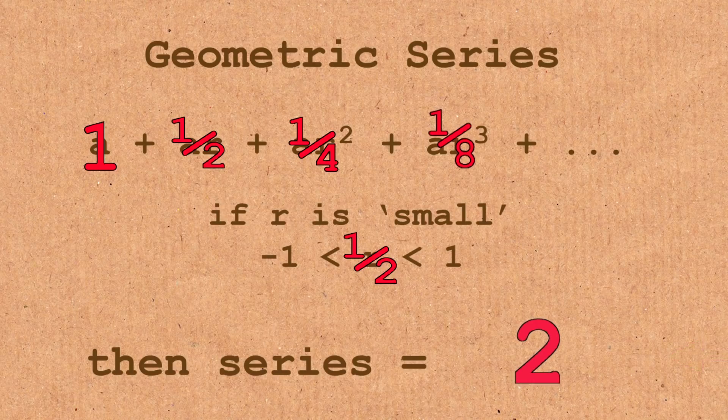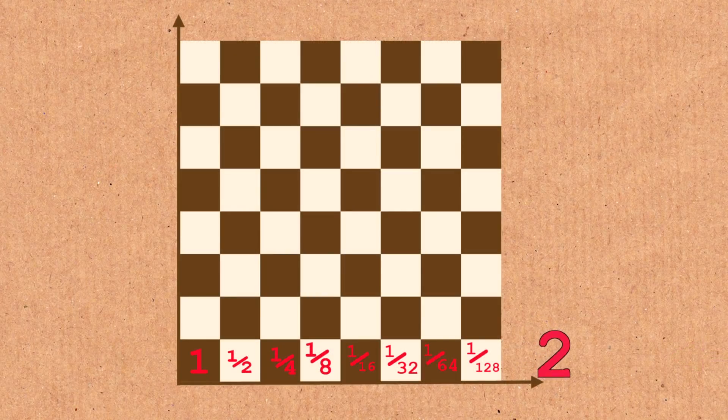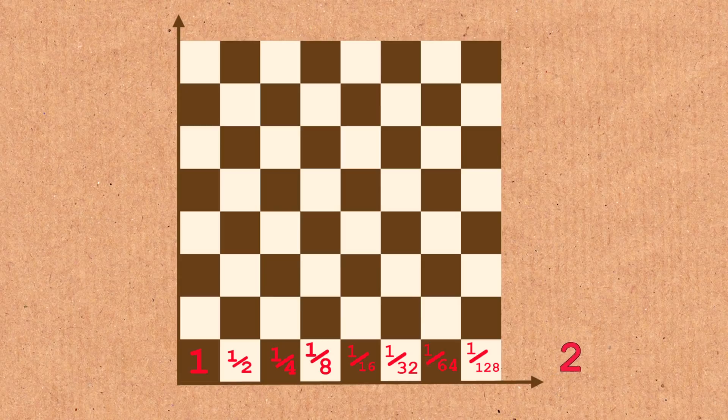All right, so we are going to add up the first row as we saw adds up to two. Now how about the second row? The second row is almost like the first one except every term is half as large. It's half of the previous one. So in other words, the sum should be half of our two, which is one.